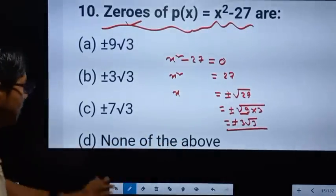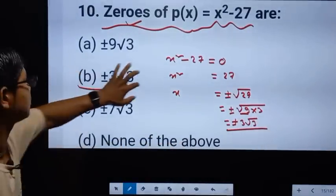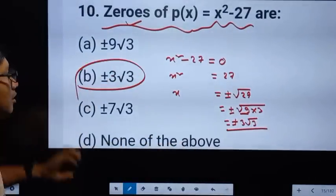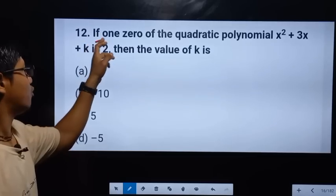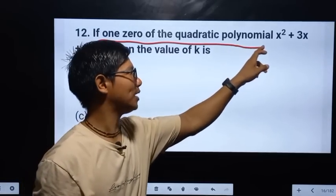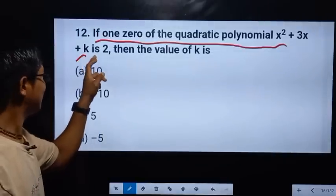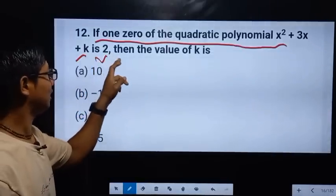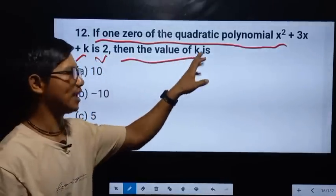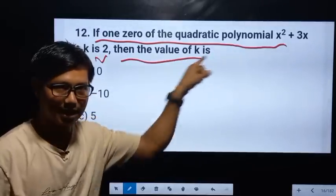Plus minus 3 root 3 is the answer. If one zero of the quadratic polynomial x squared plus 3x plus k is 2, then the value of k is what?